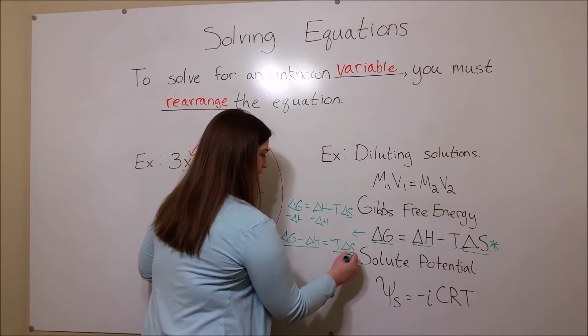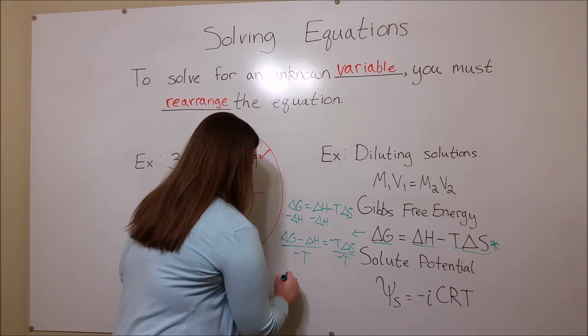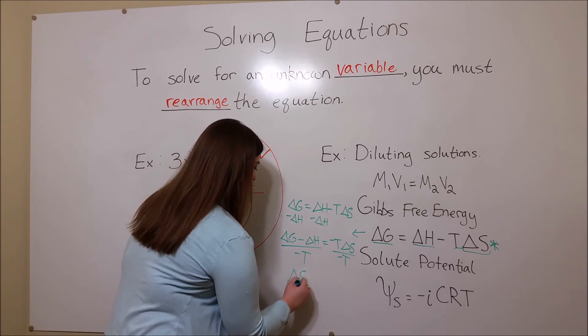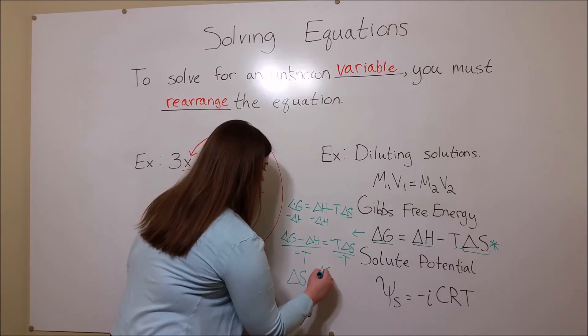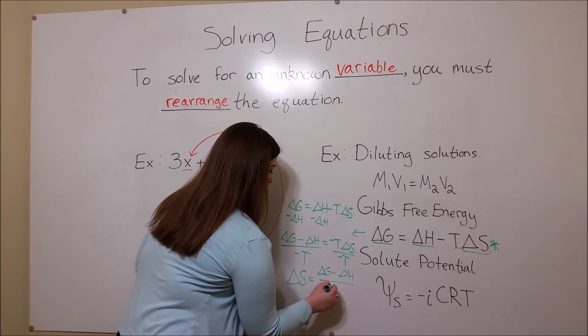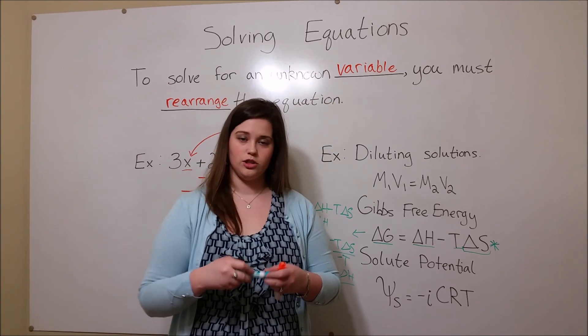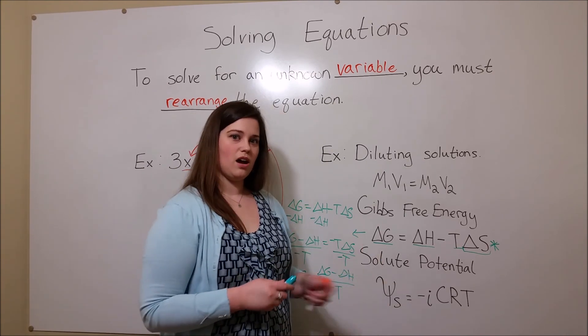and then we can divide both sides by negative T, and this gives us that delta S equals delta G minus delta H divided by negative T. So that is another example of solving an equation in a biology application.